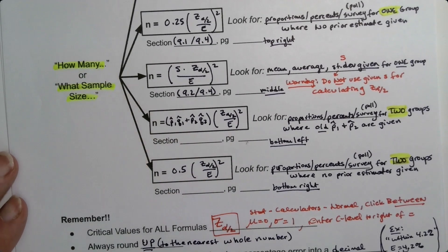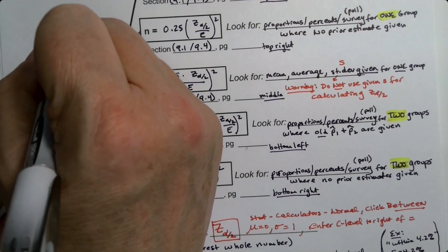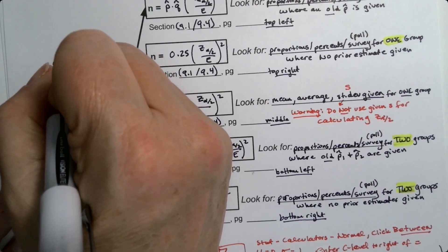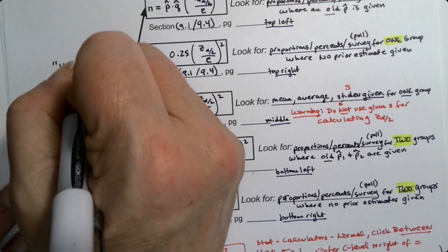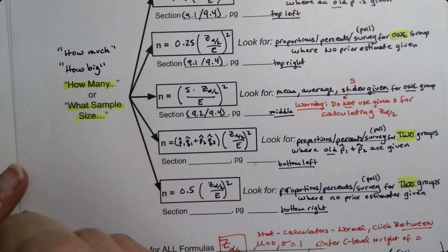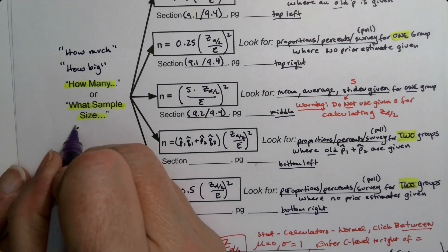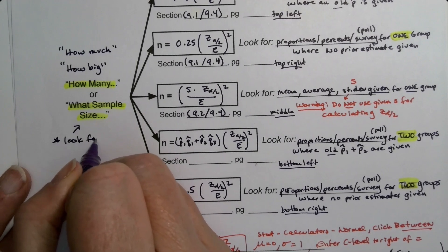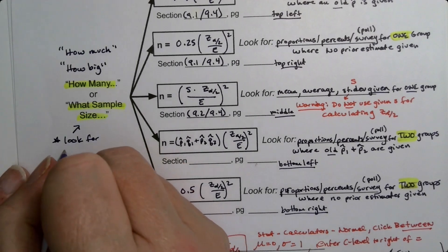How many, what sample size. So you can also see the words how big, how big a group, how much, etc. So you've got to look for the question words. That's basically what it's telling you down below.